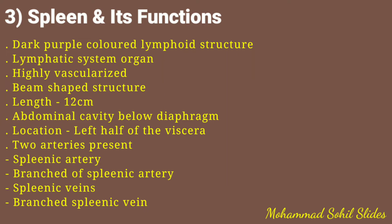The upper area of the spleen is the capsular area, composed of dense connective tissue with a small amount of smooth muscle. The inner foldings, called trabeculae, divide the spleen into different compartments containing lymphatic tissue. There are two types of lymphatic tissue: white pulp and red pulp.